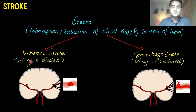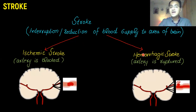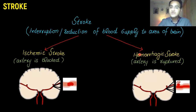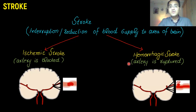In ischemic stroke, the artery supplying the brain is blocked, resulting in death of brain tissue. When that artery is ruptured, that is called hemorrhagic stroke, and blood supply to the area ahead of that artery is blocked. Ischemic stroke is our main focus, but we will briefly talk about hemorrhagic stroke as well.